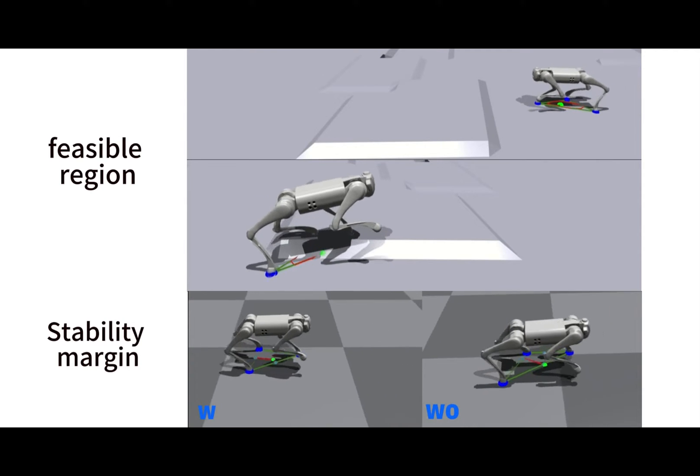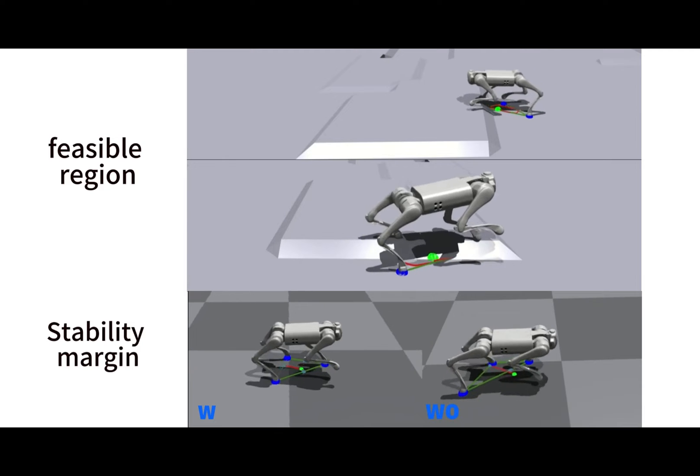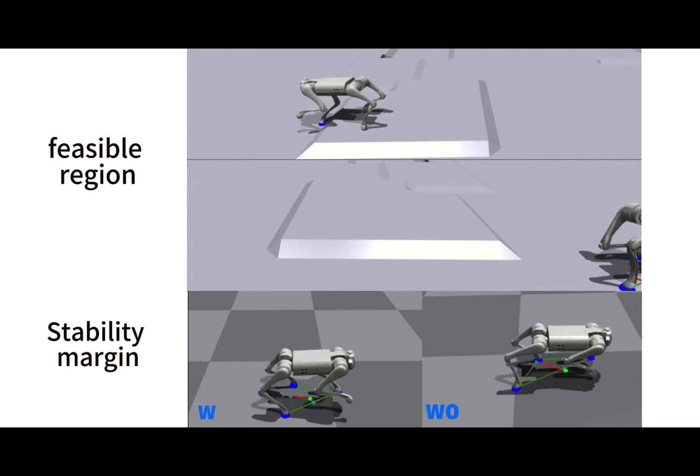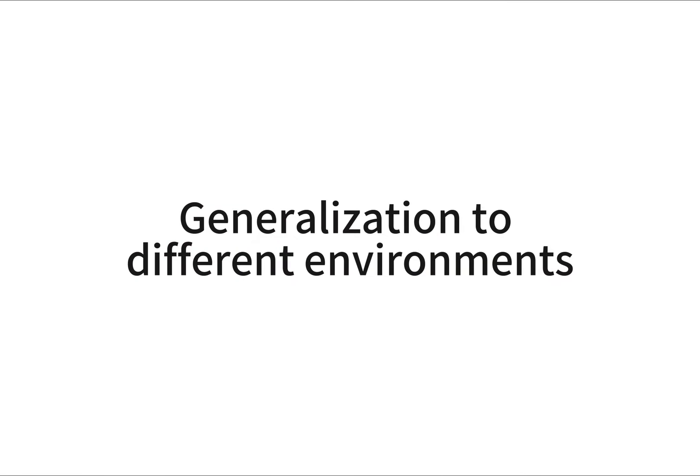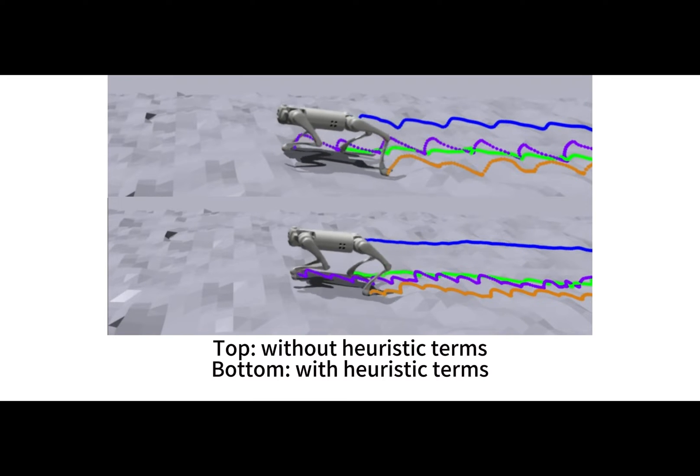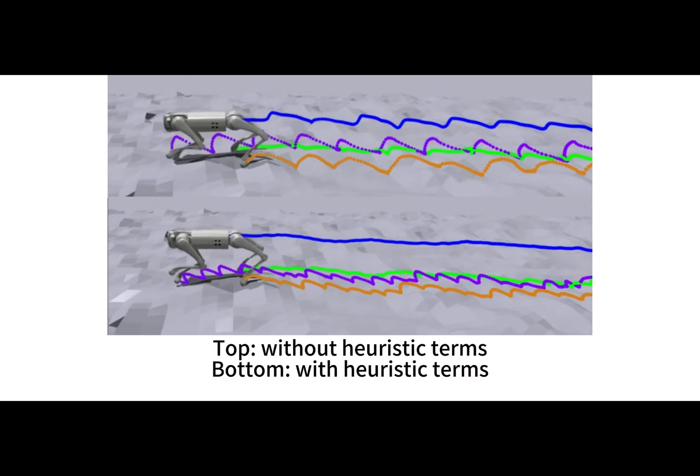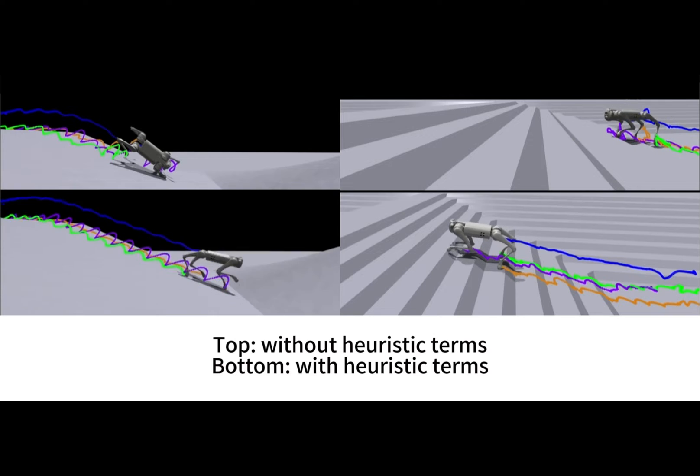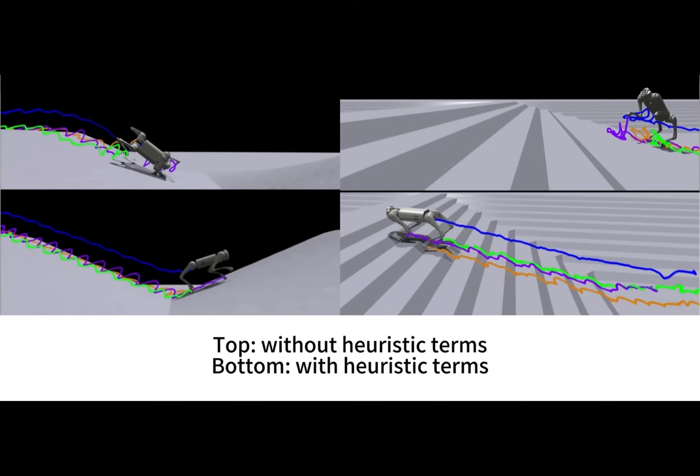Our heuristic model stability is also evaluated with some existing criteria, including feasible region and stability margin. The policy with our designed heuristic terms leads to less unnecessary motion regarding the COM and the foot trajectories. It successfully enables the failed robot to conquer the terrains that are even unseen during the training.